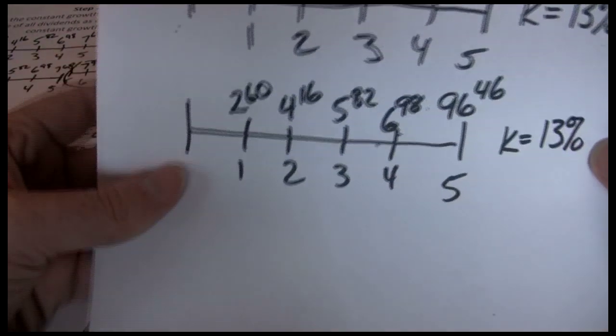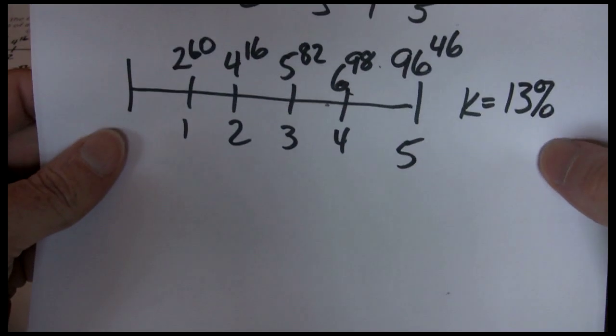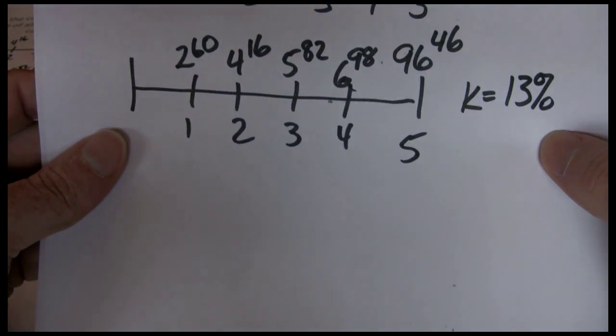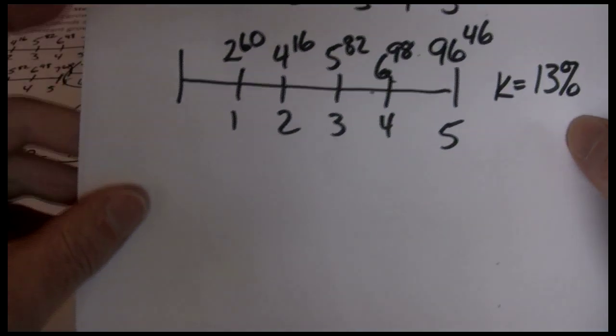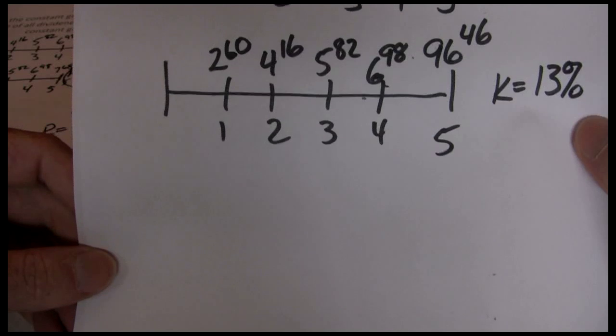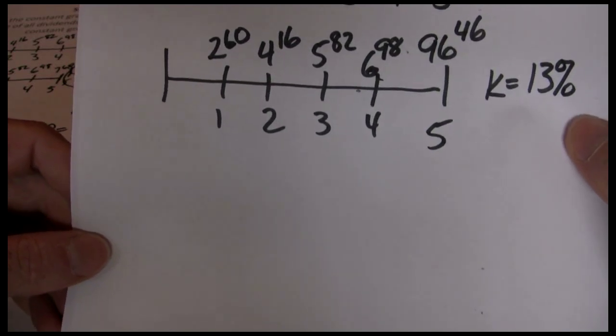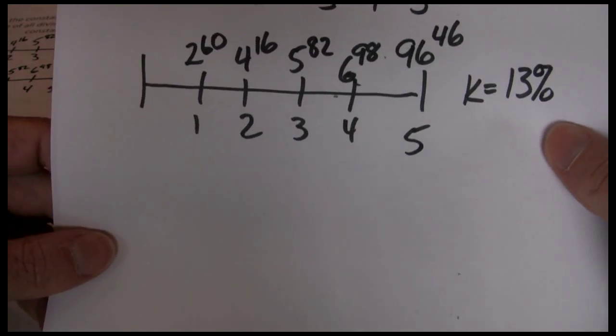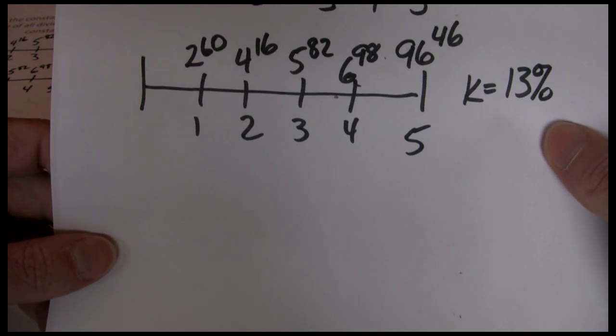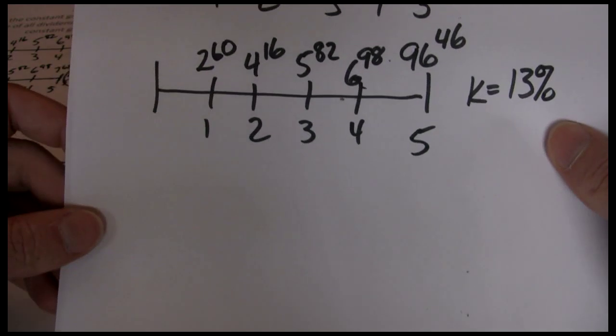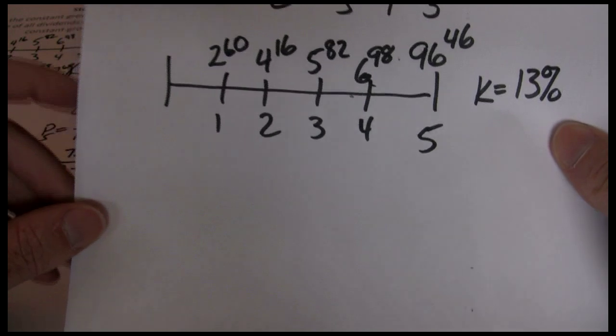Now we've got a simple uneven cash flow worksheet like we did in chapter four time value of money. We just plug these in. I'm not going to go through each calculator approach—if you're having problems with net present value calculations, just review the chapter four notes. Each calculator sets these up a little bit differently.